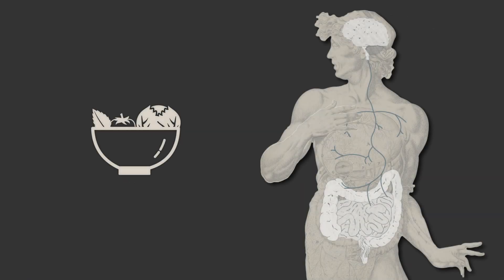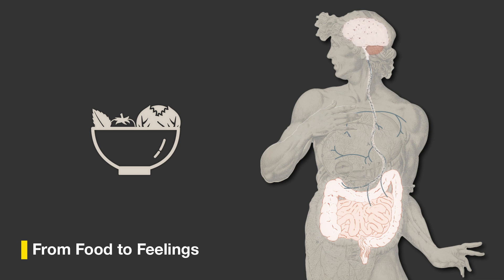By sensing nutrients, neuropod cells convey rapid subliminal sensations to convert food into feelings.